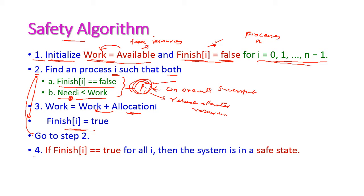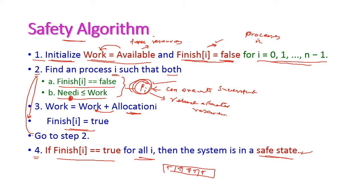Step 4: If Finish[i] equals true for all i — if all processes have finished, that is, all are marked true — then the system is in a safe state. With this algorithm, we will try to solve one problem.